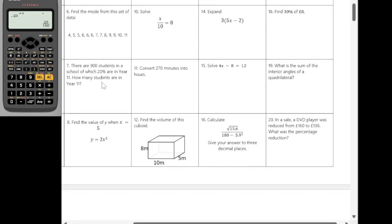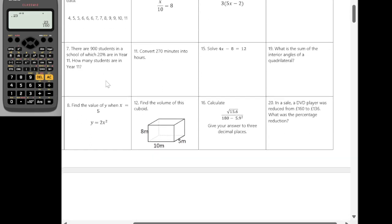Okay, question six. Find the mode from this set of data. So the mode is the one that happens the most. So looking at the set of data, we've got three sixes. So I'm going to go that six is the mode.